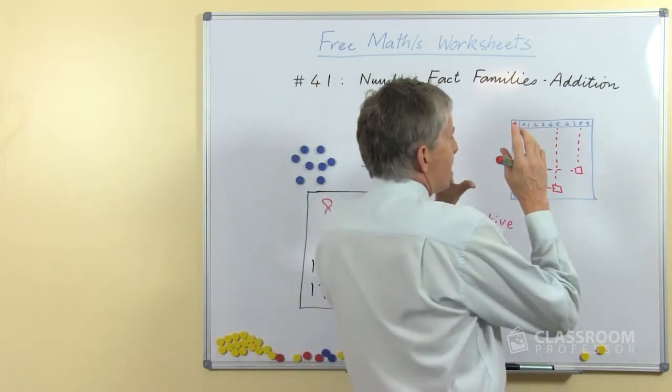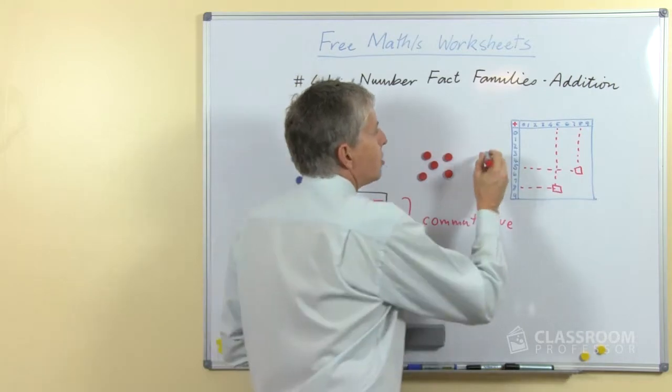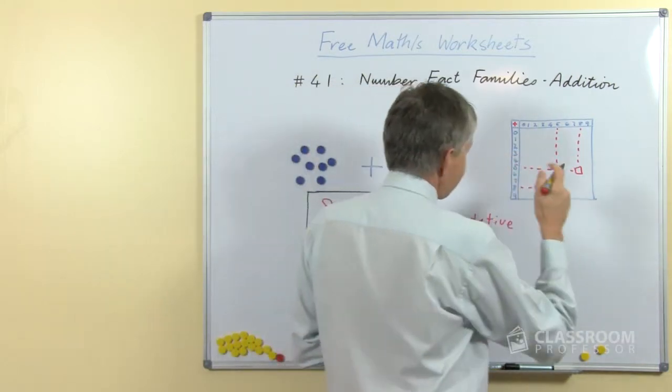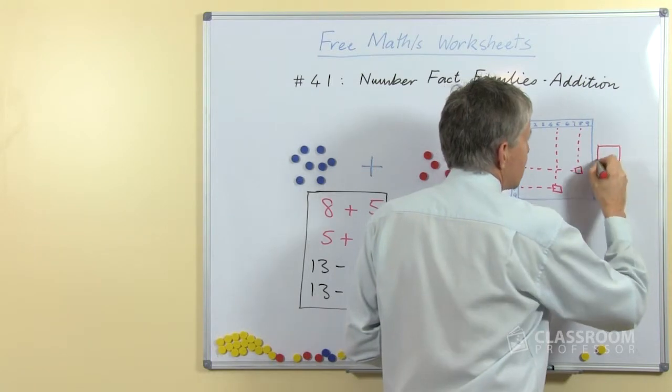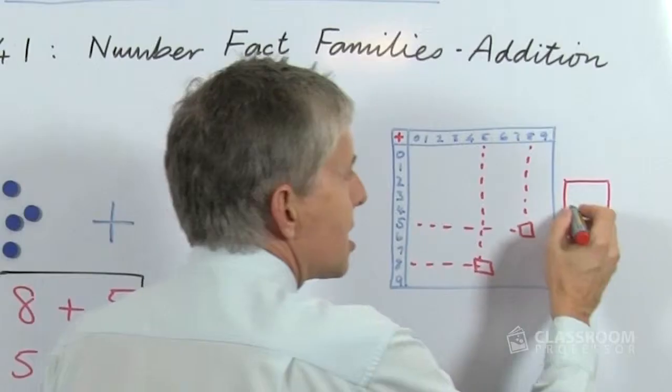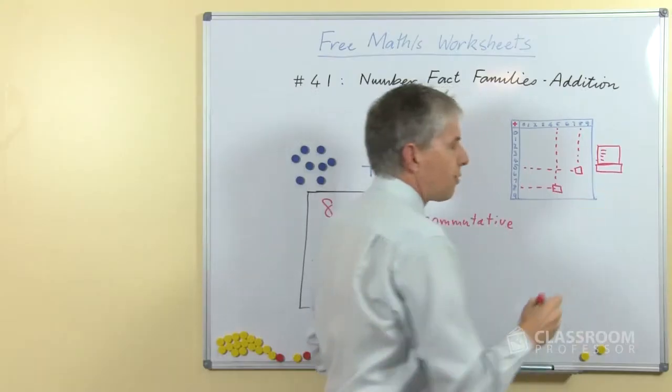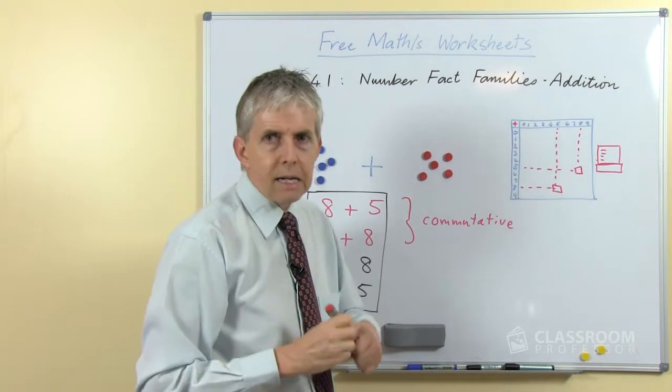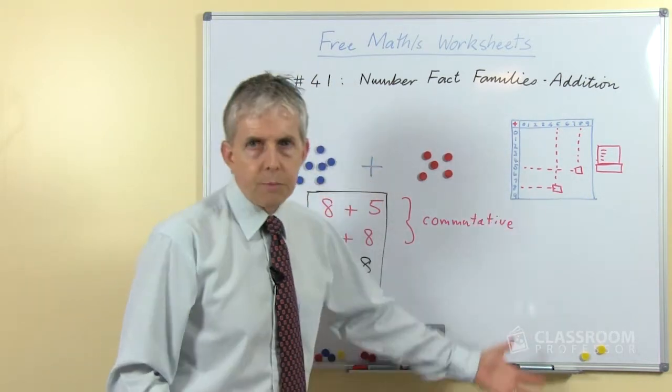The software allows you to find those turnarounds. The other thing it will do is on the side—and I apologize I can't remember which side because we're still in the design phase, I think it's on this side—there's a little box with a number fact family in the box, and so it will list the 4 number facts. That's just one of the features in the program.